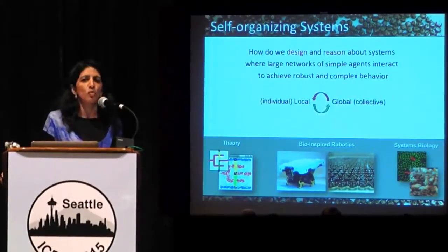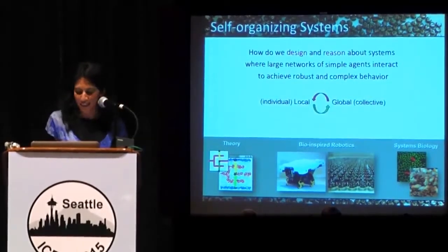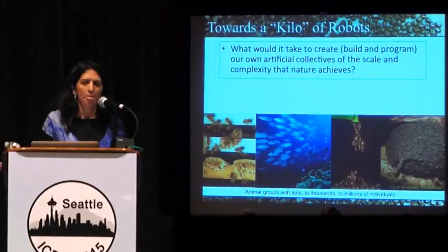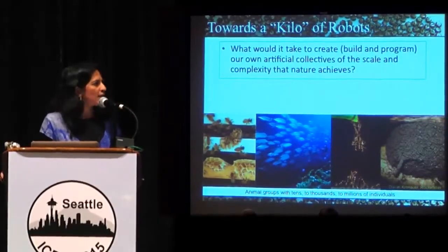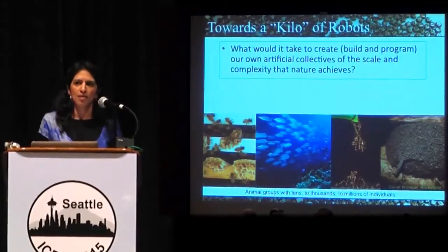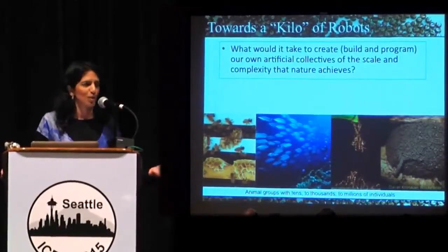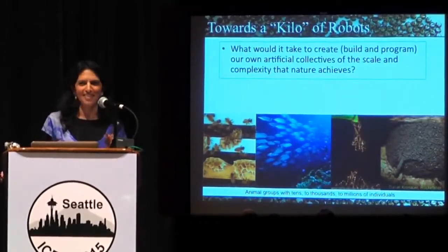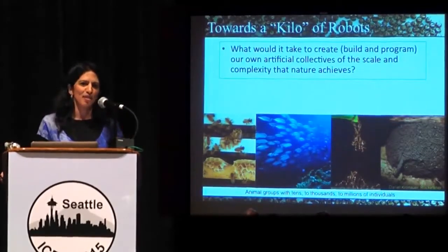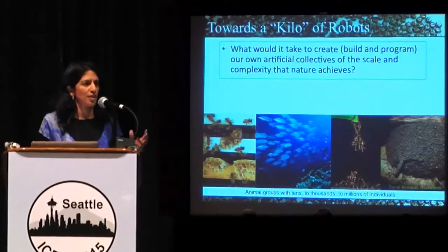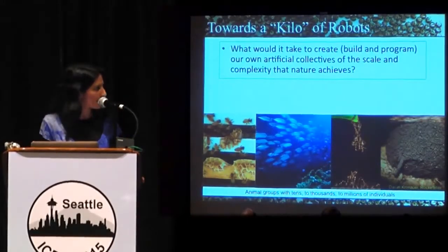Today I'm going to talk about one project from my group called the kilobot project. The motivating question is: could we create a robotic swarm that gave us a sense of what it would be like to have one of these swarms with many, many individuals cooperating? Here you've got thousands to millions of individuals in biology. We're going to start with just a thousand. So could we make a thousand autonomous robots work together, and what would be involved in creating that level of swarm in our own lab?